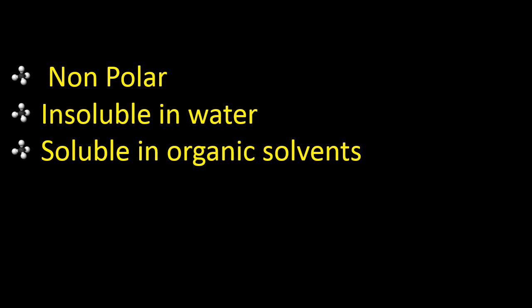Hydrogen belongs to group number 1 because it has one electron in its outermost shell, but please remember most of its properties resemble non-metals. The carbon-hydrogen bond in alkanes is a covalent bond, which means that carbon shares its outer valence electrons with up to 4 hydrogens. This completes both of their outer shells, making them stable. Carbon follows the octet rule and hydrogen follows the duplet rule.